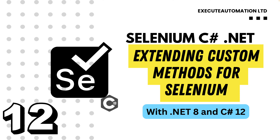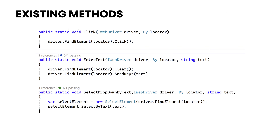Welcome to the next lecture of our course Selenium with C#.NET. In this lecture we'll be talking about extending custom methods for Selenium with C#.NET. If you remember, until our last video while we were discussing about page object model, we didn't really use our custom method that we wrote. The reason why we didn't use it is because we directly used the methods which were available in Selenium C# itself, but our existing method has some advantages as well as some disadvantages.